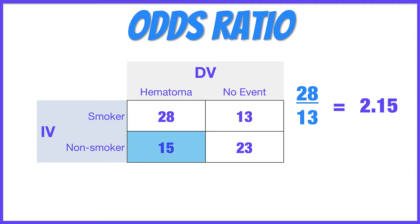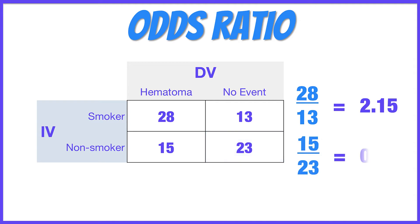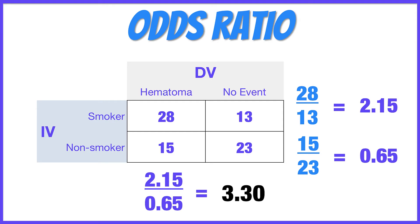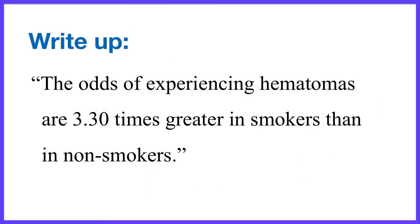That is, smokers would seem to experience about twice as many hematomas. Now do the same thing for non-smokers. There were 15 participants who were non-smokers who experienced a hematoma, and 23 who were non-smokers and did not experience a hematoma. The odds of experiencing a hematoma versus not for non-smokers are 0.65 — meaning non-smokers seem to have fewer hematomas. The odds ratio is the ratio between the odds of smokers experiencing hematomas to the odds of non-smokers experiencing hematomas. For our example, the odds ratio is 3.30 — the odds of experiencing hematomas are 3.3 times greater in smokers than in non-smokers.